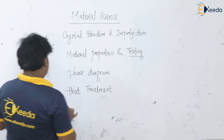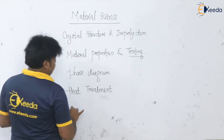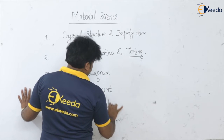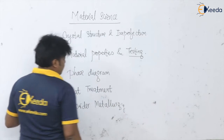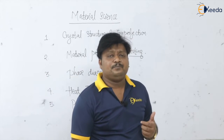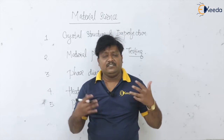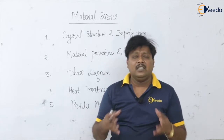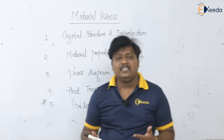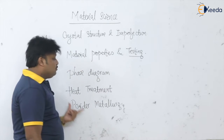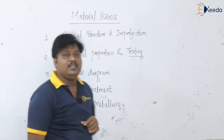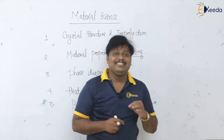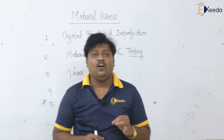The fifth topic that we are going to learn is powder metallurgy. What are the different methods to produce powders, how the blending of the powder is done, then compaction. Various powder making processes, their advantages, applications, and limitations — we are going to discuss all of this in this topic of materials technology or material science.